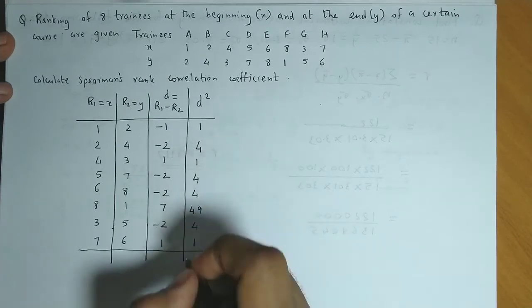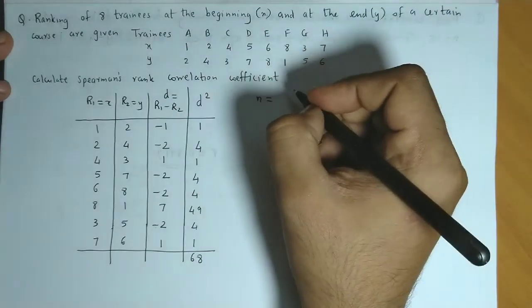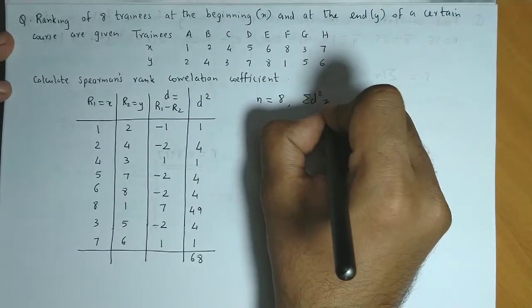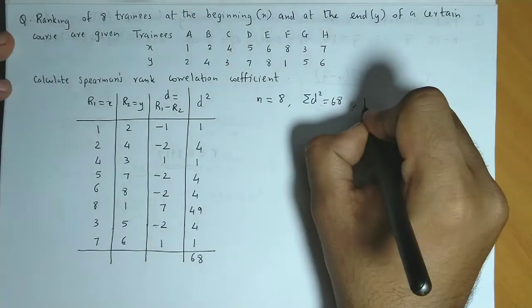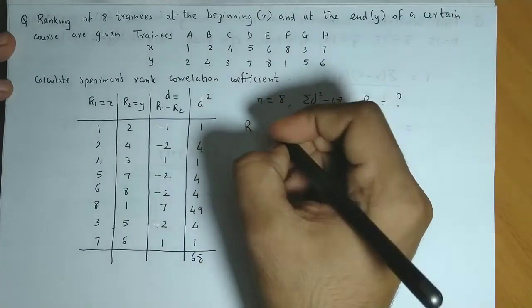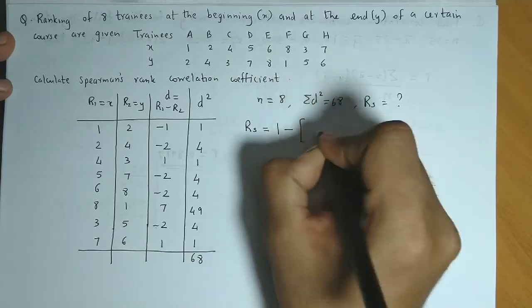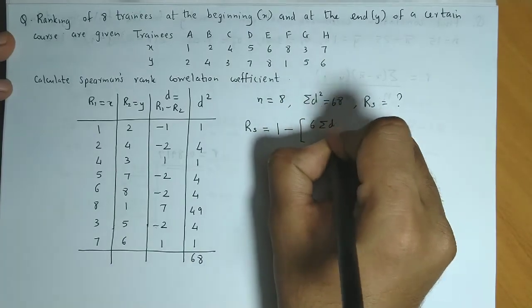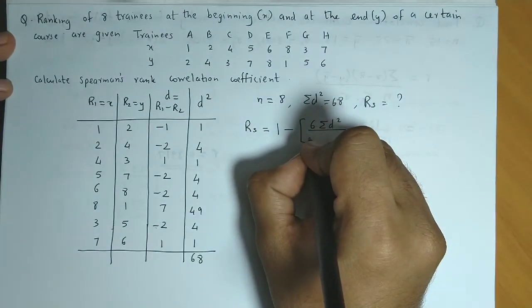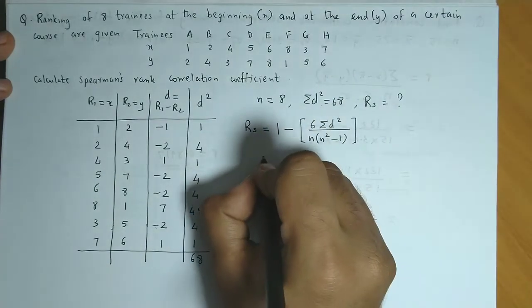So here if you observe, the number of pairs of observations is 8, summation of D square is 68, and we have to obtain the value for RS. The formula for Spearman's rank correlation coefficient is RS equals 1 minus 6 times summation of D square upon N cube minus N, or we could write it as N into N square minus 1.